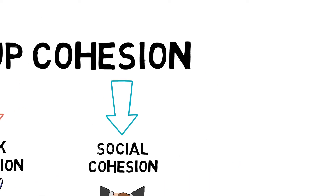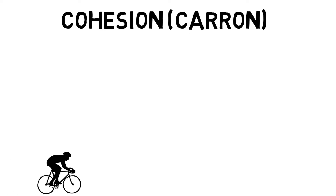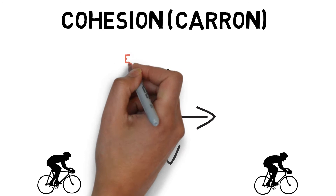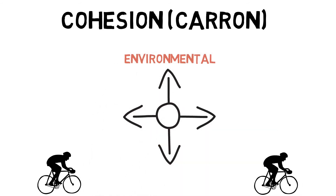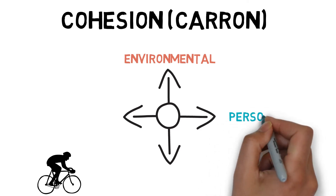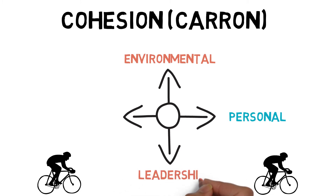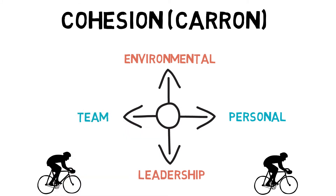Carron's model explains four factors that affect the development of cohesion. Environmental factors, which bind members together, such as contracts, age or nationality. Personal factors, which bind members together through collective motives and values. Leadership factors, which are about the behaviour of leaders and coaches. And team factors, relating to the group, such as identity or member ability.